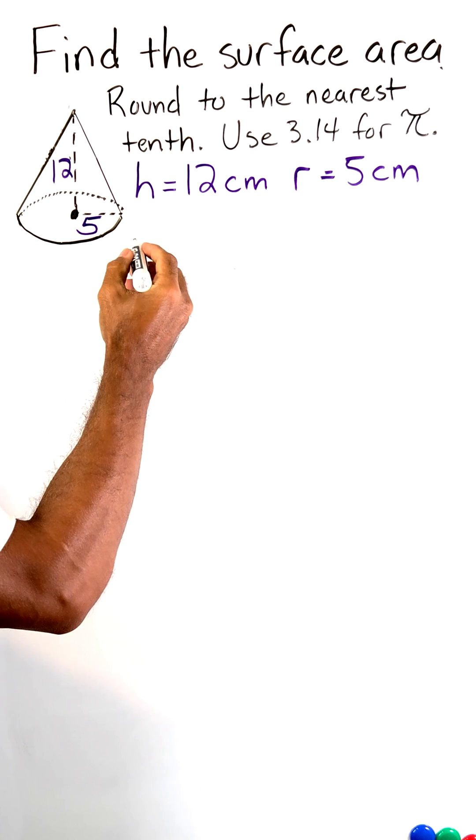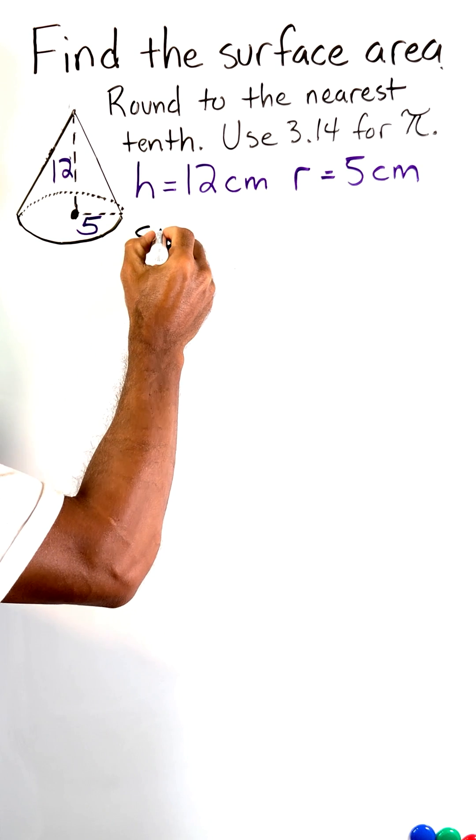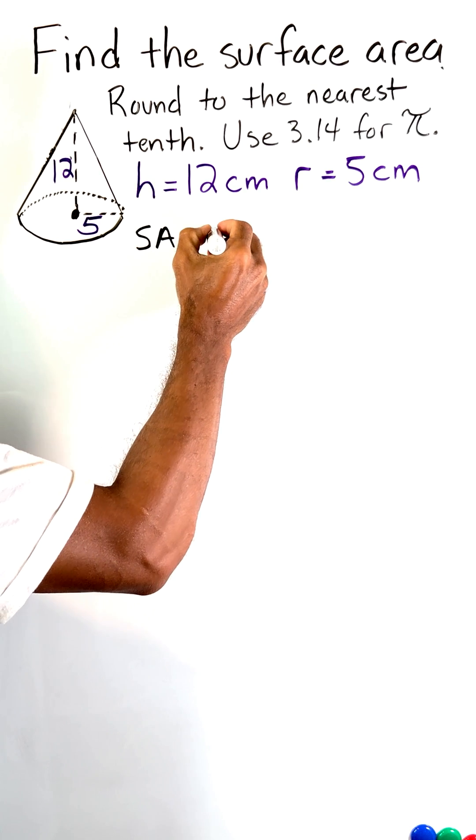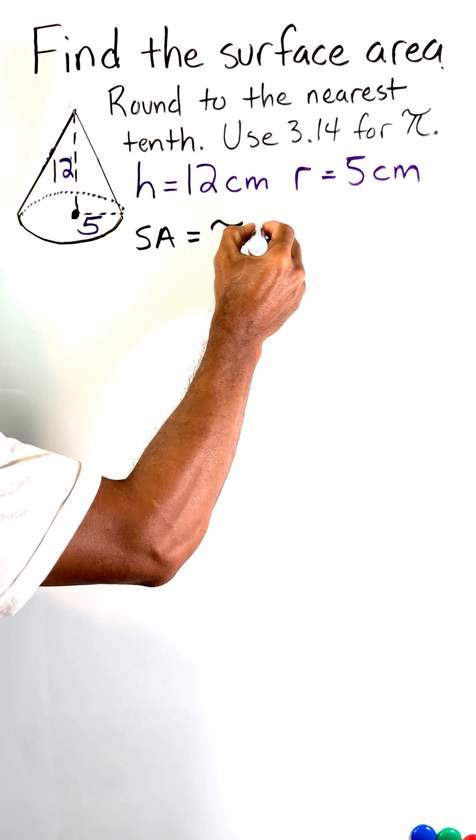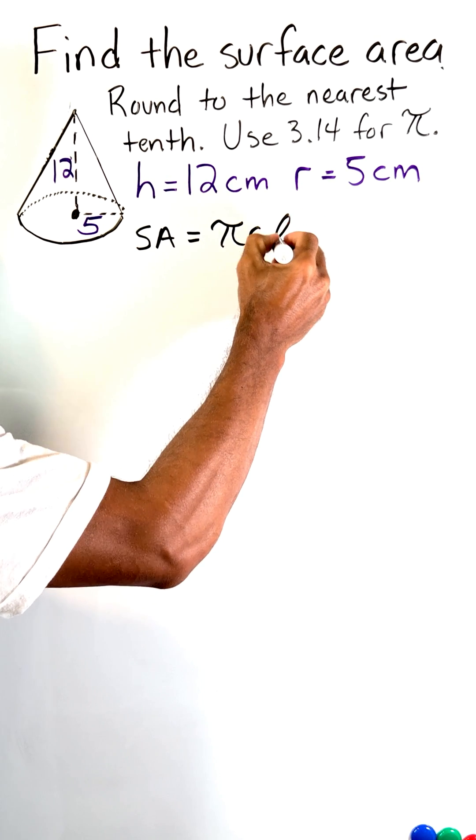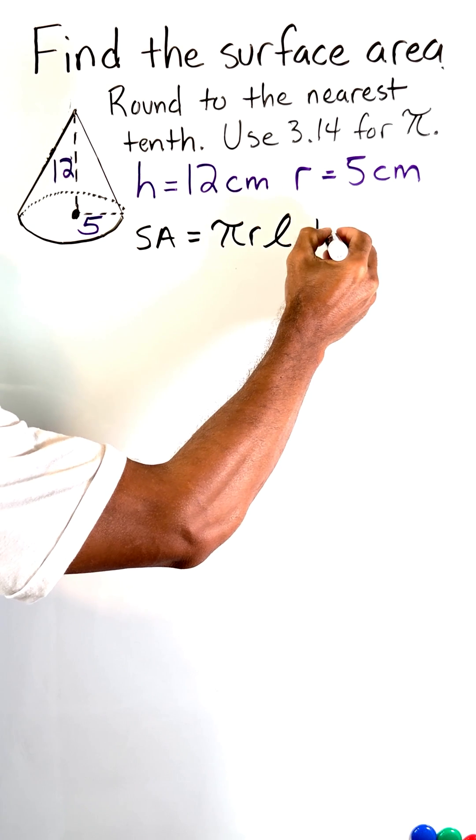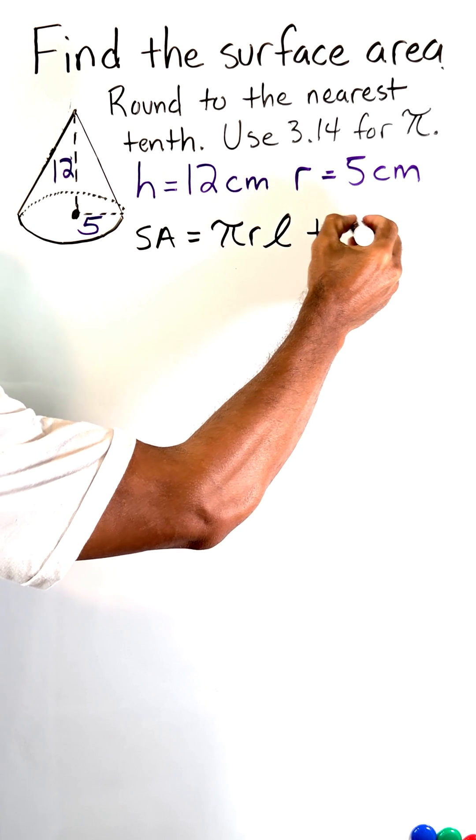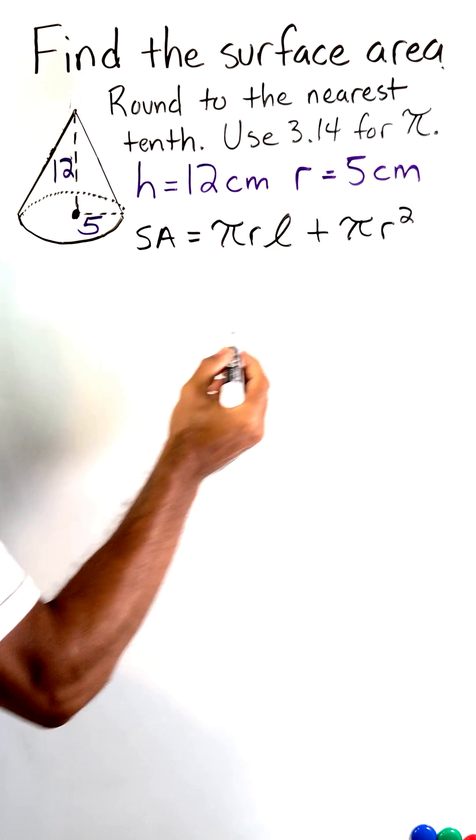The first thing that we're going to do here is state our formula. The surface area of a cone is equal to pi times radius times the slant height of our cone plus the area of the cone's base, which is pi times radius squared or pi r squared.